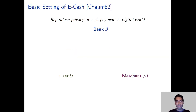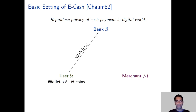The high-level idea of eCash is that we want to reproduce the privacy of cash payments in a digital world. In order to take money out of its account, a user engages in a withdrawal protocol with a bank. At the end of this protocol, it obtains a bank-certified wallet that allows it to spend up to n coins. The user is known to the bank at this stage, and this phase is entirely analogous to an ATM withdrawal.